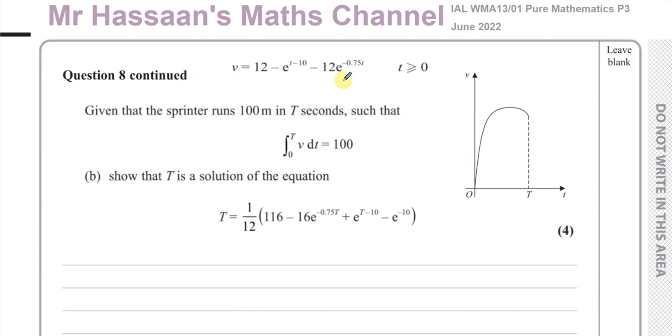Such that the integral between zero and T of this function v is equal to 100 with respect to t. So basically, the area under this graph is equal to 100, and we got to show that T is a solution of the equation.